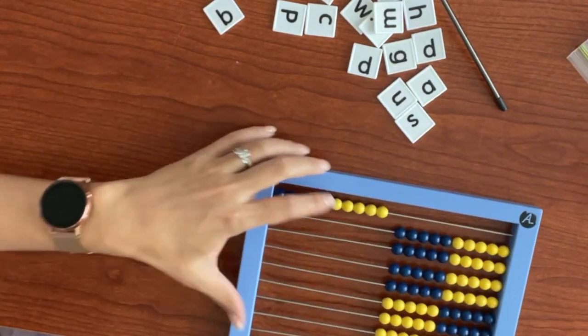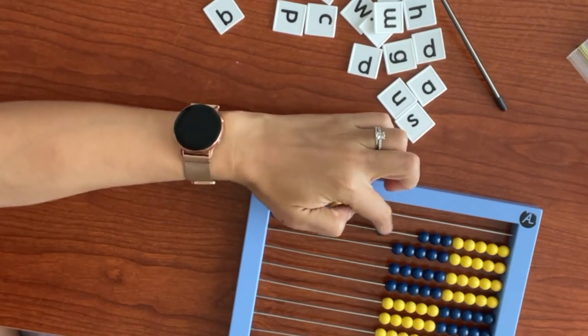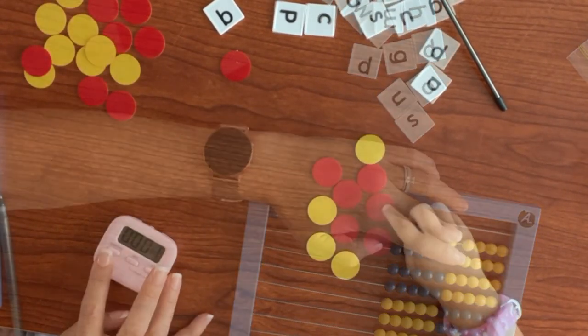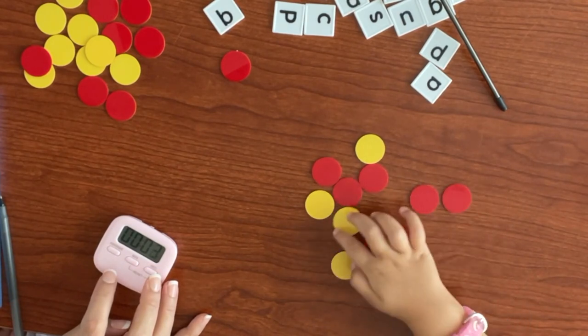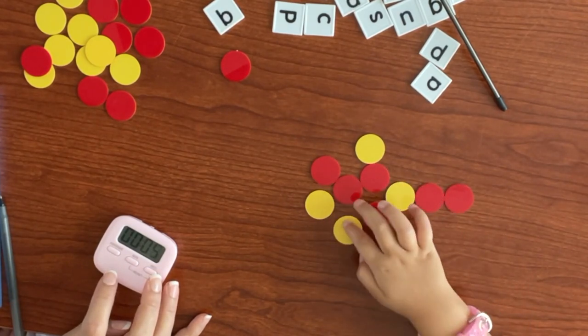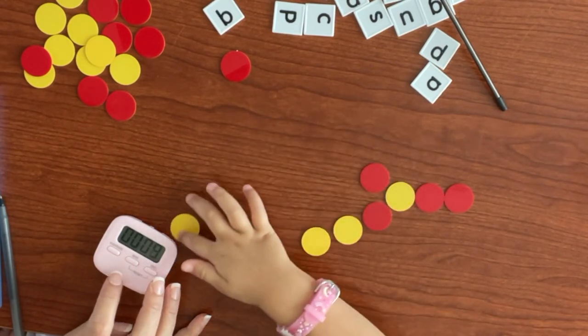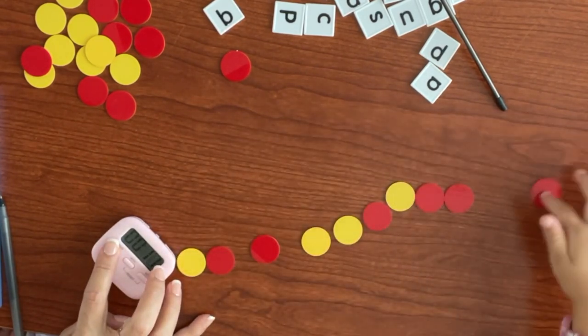And we're going to keep going now. Eleven, twelve, twelve, thirteen, fourteen, fifteen. One, two, three, four, five, six, seven, eight, nine, ten. Good.